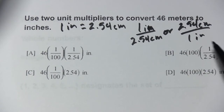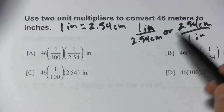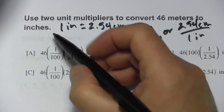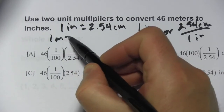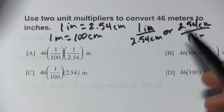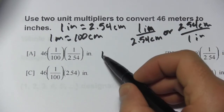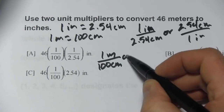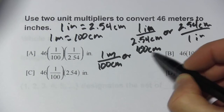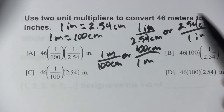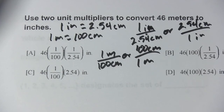These work the same way; we just have to pick the right one for our problem. The other unit multiplier we need is to get from meters to centimeters: 1 meter equals 100 centimeters. So I'll make two fractions — one with 1 meter on top and 100 centimeters on the bottom, and the other with 100 centimeters on top and 1 meter on the bottom. These are our four unit multipliers.